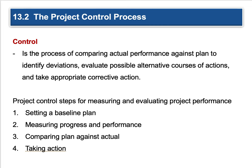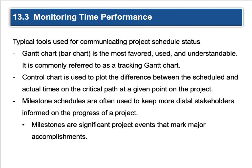For monitoring time performance, the two typical tools are the Gantt chart and the control chart. The Gantt chart is a bar chart, the most favored, widely understood tool, commonly referred to as a tracking Gantt chart. A control chart is used to plot the difference between the scheduled and actual times on the critical path. The Gantt chart has been the big one for this course. Milestone schedules are often used to keep distant stakeholders informed of project progress — milestones mark major accomplishments.